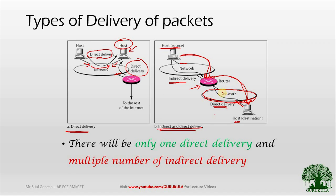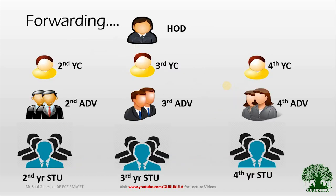To keep it simple: delivery is handing over the packet to the neighboring node. If the neighboring node is the actual destination, we call it direct delivery; if the neighboring node is not the actual receiver, we call it indirect delivery. With this understanding of delivery, we will proceed to understand what exactly the second process — forwarding — is. To understand forwarding, I will take an example of an infrastructure that most engineering institutions will have.